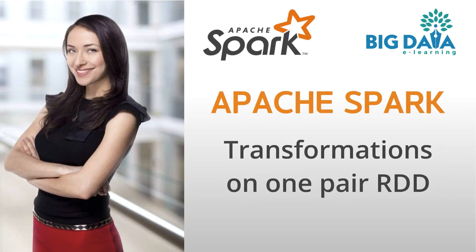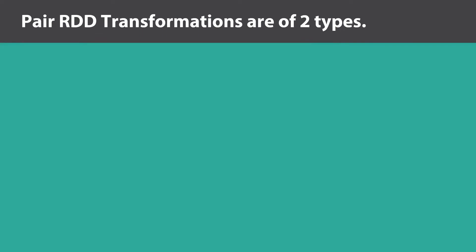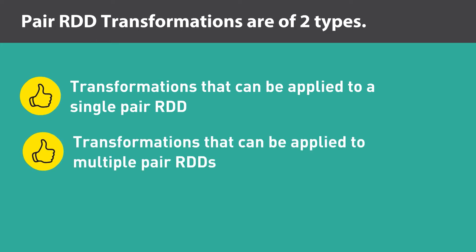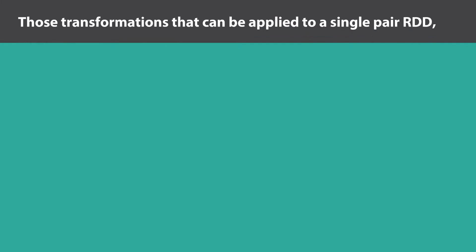Transformations on one pair RDD. Pair RDD transformations are of two types. Some transformations can be applied to a single pair RDD, whereas some other types of transformations can be applied to multiple pair RDDs. In this video, let's look at those transformations that can be applied to a single pair RDD.